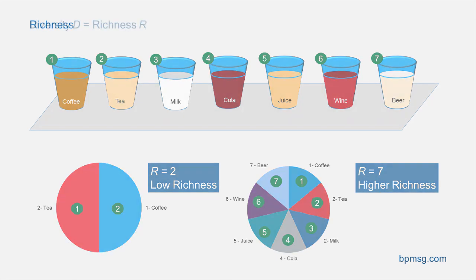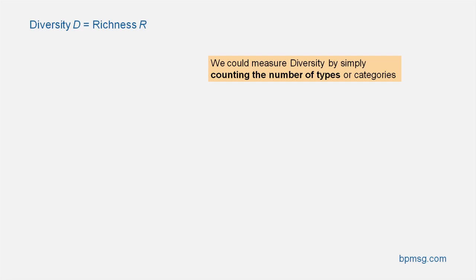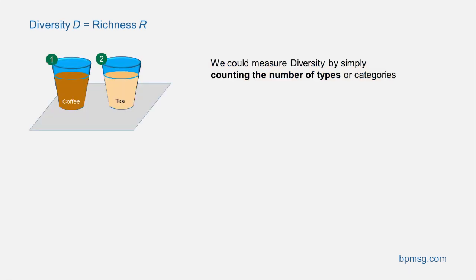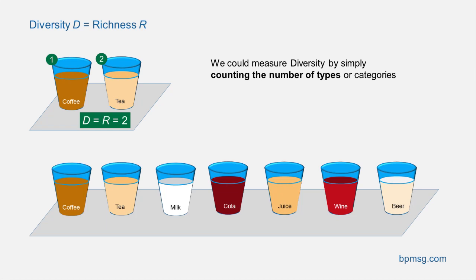As the simplest measure of diversity we could just count the number of product types or categories and define diversity as richness. So in the first case the diversity is two, in the second case seven. Richness has been a popular diversity index in ecology — it simply quantifies how many different types the data set of interest contains.